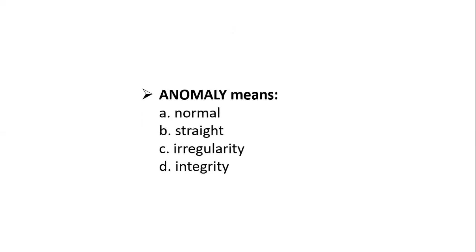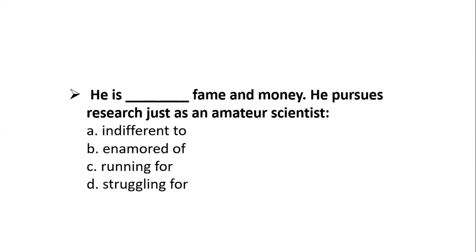Anomaly means: normal, straight, irregular, or integrity. The correct option is C — irregular. For the next question: 'He is ___ fame and money. He pursues research just as an immature scientist.' The correct option is A — indifferent to. Indifferent means showing no interest or care.